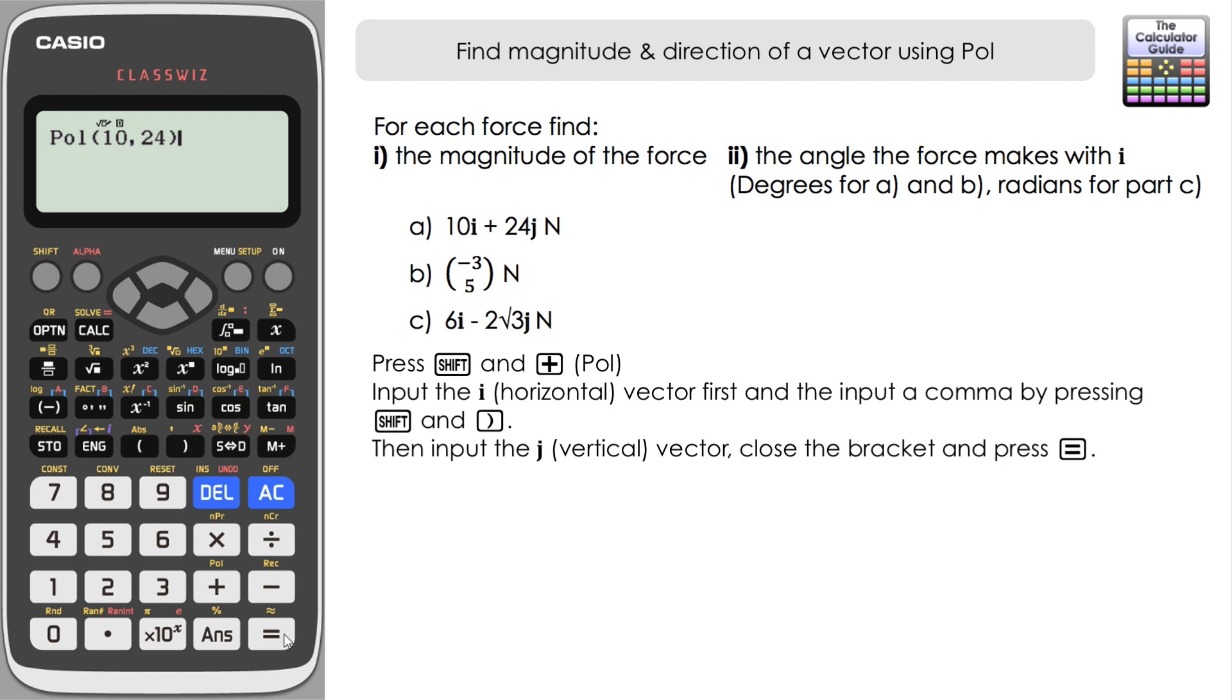If everything's correct press equals and then we've got two results here. Now the notation that is used is relevant for polar coordinates there, radius and theta representing the angle but it's going to work well enough for us to find magnitude and direction of these forces.